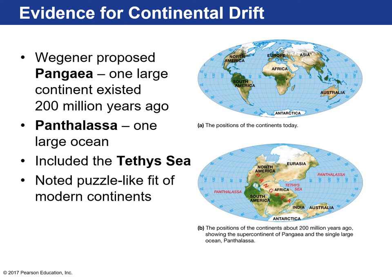If you had all the land masses grouped together like you see here, this would be Pangea. This would make it an incredibly large ocean, larger than the Pacific Ocean is today, which is incredible. This here would be the Tethys Sea, 200 million years ago.